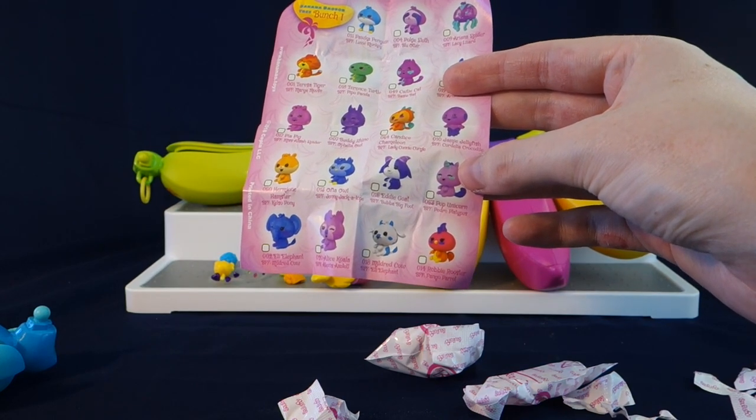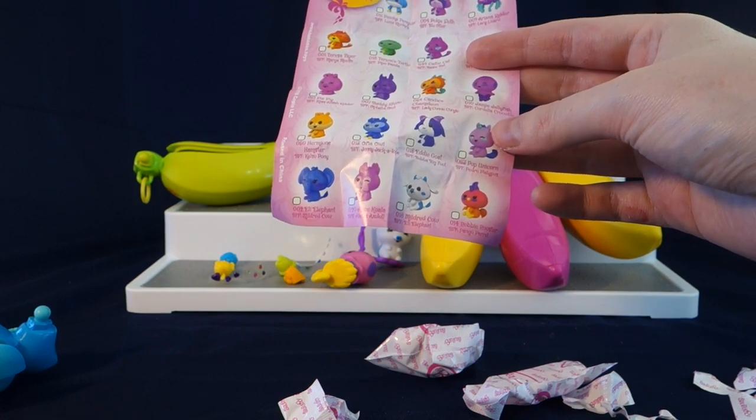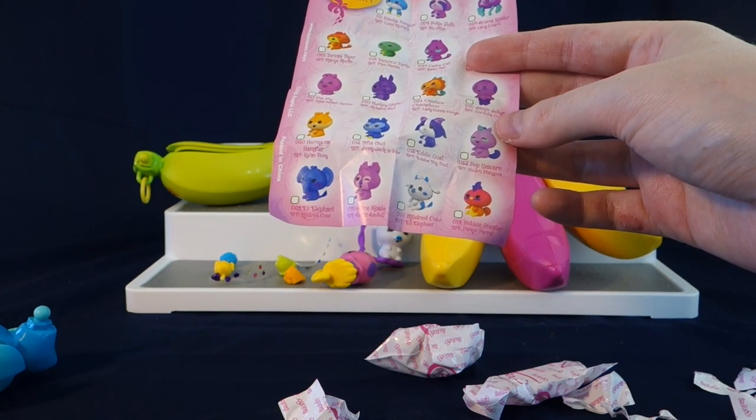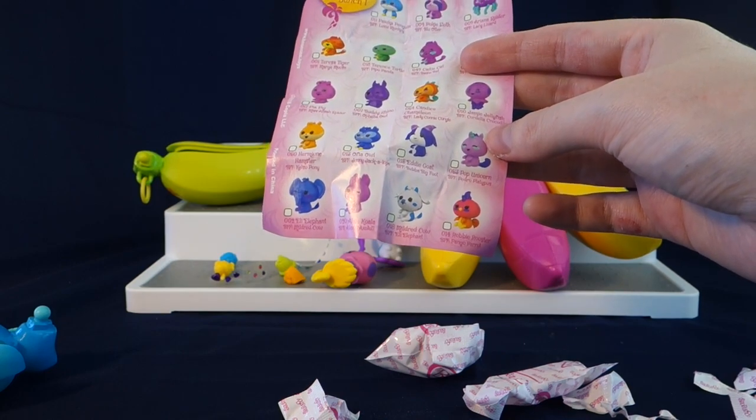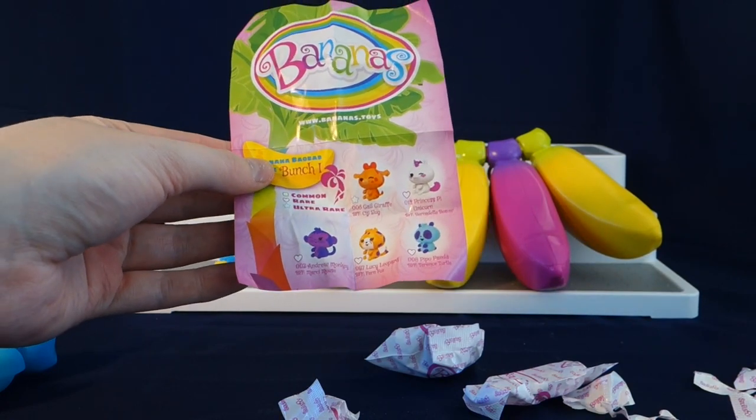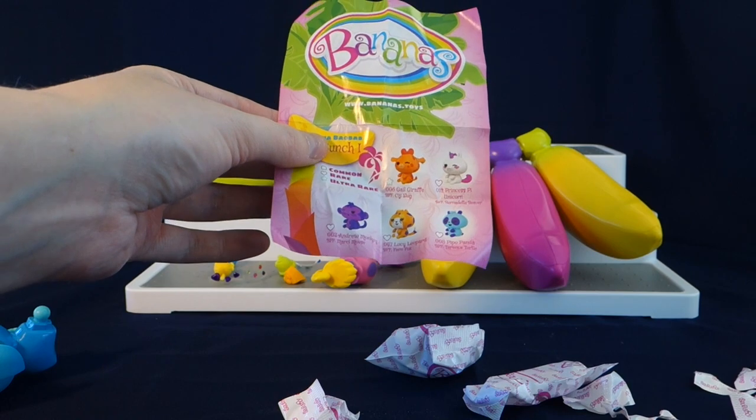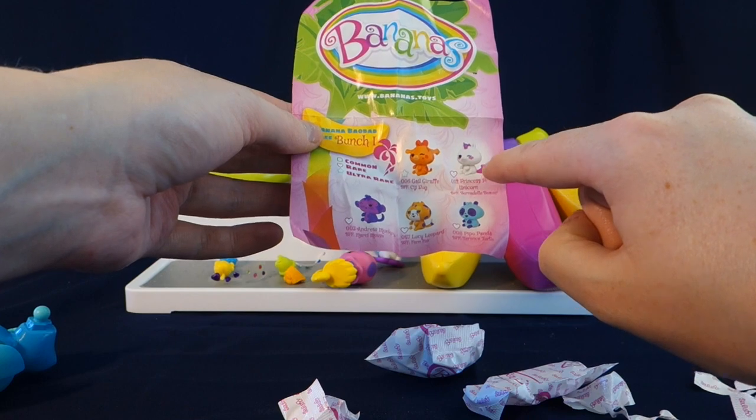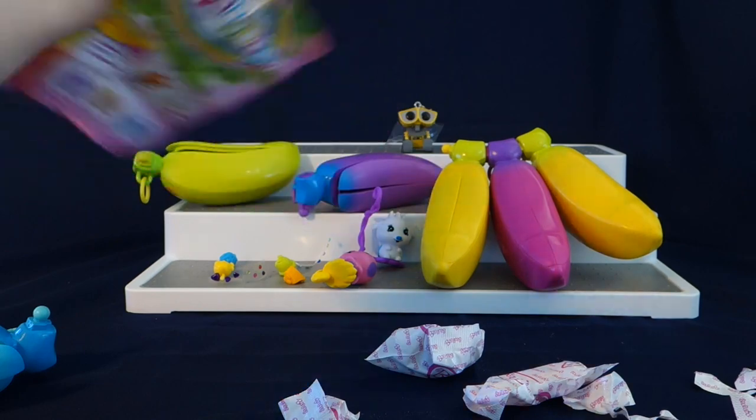Then we have a hamster, an owl, a goat, a unicorn, an elephant, a koala, a cow. And the cow's name is Mildred. And then we also have a rooster. Very cute. And the ones here on front are rare and ultra rare. So the giraffe here is an ultra rare. And then this unicorn is a rare. The monkeys are rare, leopards are rare, and a panda is rare. Very cute.